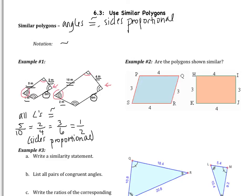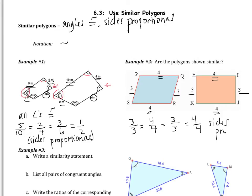In example 2, are the polygons shown similar? We have to check: are the angles congruent and are the sides proportional? The sides are definitely proportional because they're all congruent — I have 3 and 3, 4 and 4, 3 and 3 again, 4 and 4 again. So 3 corresponds to 3, 4 corresponds to 4, 3 corresponds to 3, and 4 corresponds to 4. The sides are proportional — that definitely checks out.